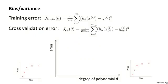Concretely, let's define our training error and cross-validation error as in the previous videos — specifically the average squared error as measured on the training set or as measured on the cross-validation set.